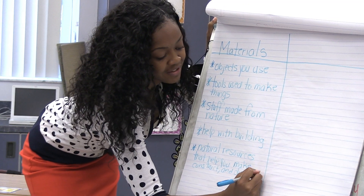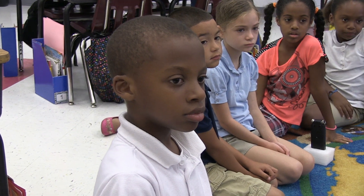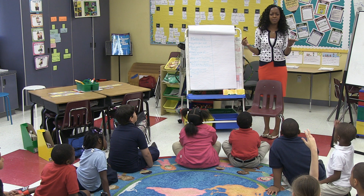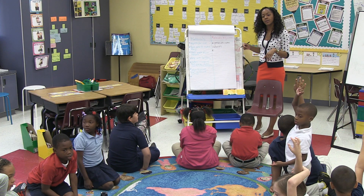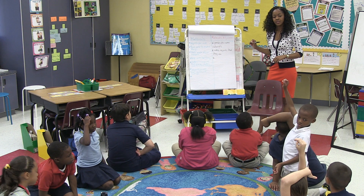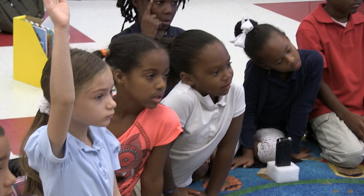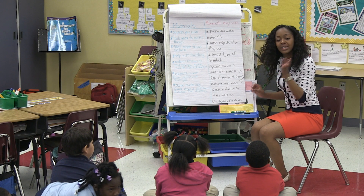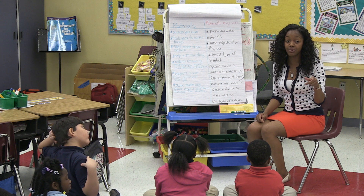We've got a really extensive list of materials. Now that we've talked about materials, I want us to talk about what a materials engineer could be. What could be the job of a materials engineer? A person who makes objects that he or she uses. A special type of scientist. I am thoroughly impressed. So as we're listening to this book called Yee-Min's Great Wall, you are going to find out about a materials engineer — and that materials engineer just happens to be Yee-Min's grandfather.